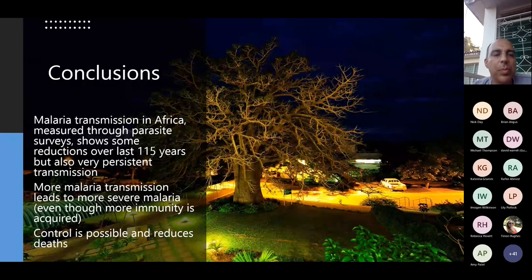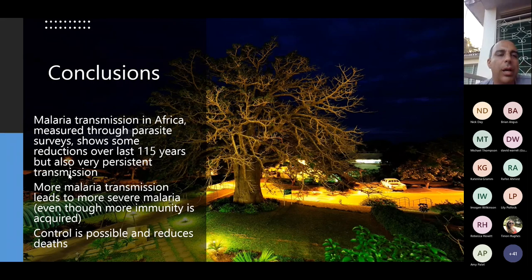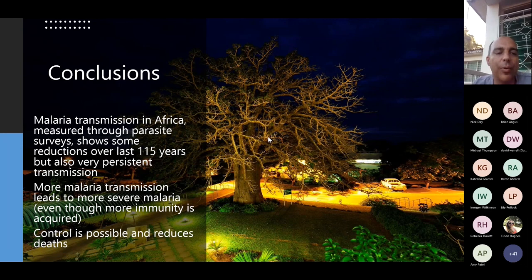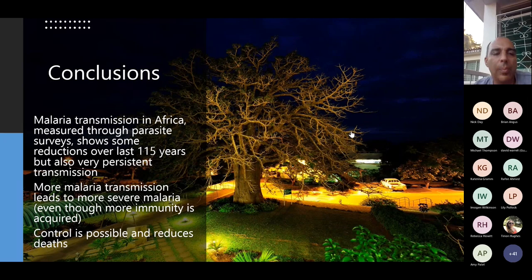That brings me to my conclusion. Malaria transmission in Africa, as measured through parasite surveys, shows reductions over 115 years — clearly seen in east Africa and expected to generalize across the continent. More malaria transmission leads to more severe malaria, and even though immunity is acquired with greater exposure, that isn't enough to undo the harmful effects of malaria. The hopeful conclusion is that malaria control is possible, reduces deaths, and is without doubt a good thing.